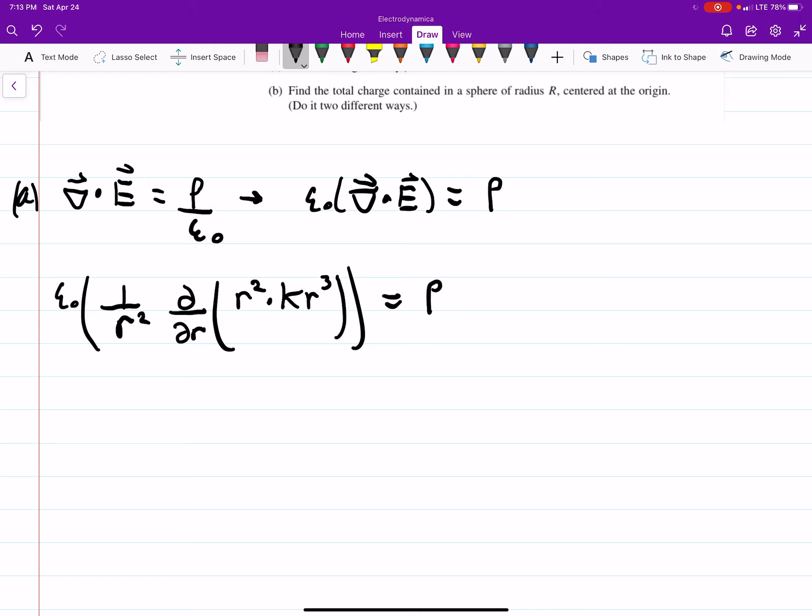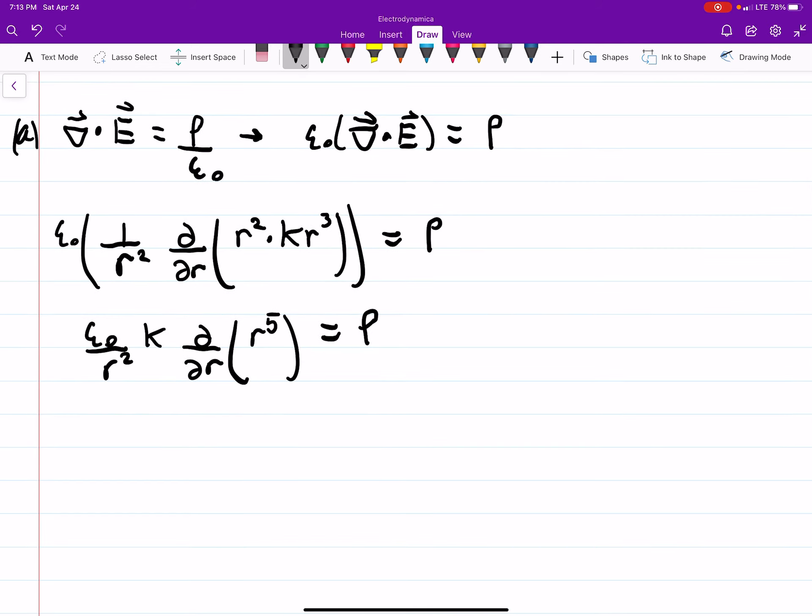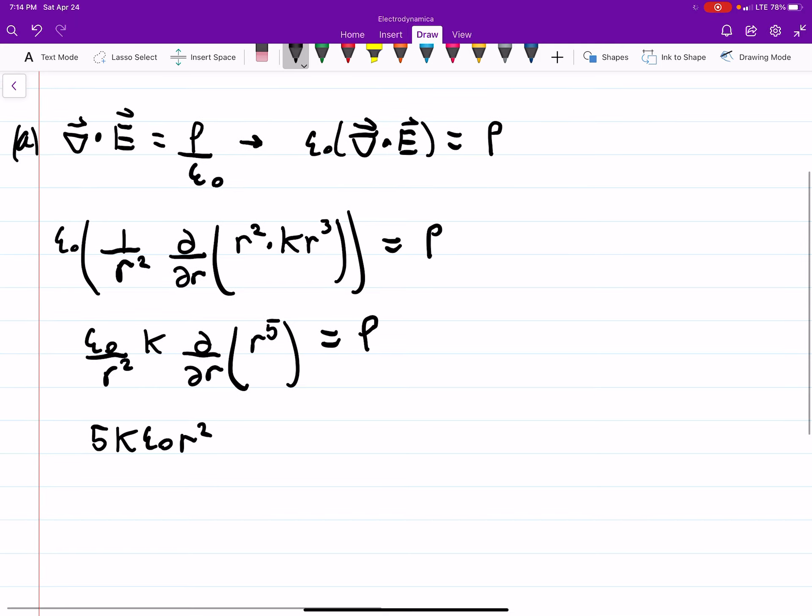So this is epsilon over r-squared times k times d by dr r-to-the-fifth equal to our charge density. This is just a power rule, so you get 5k epsilon naught. That'll be an r-to-the-fourth, but we have an r-squared outside, so you'll be left with an r-squared in the numerator. This equals your charge density rho. That's how you find the charge density.